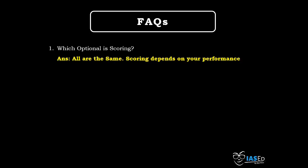There are frequently asked questions regarding the optional subject. The first question I get from new aspirants is: which optional is a scoring optional — which subject can fetch you more marks? My answer is that it is nothing like that. All subjects are the same. Your scoring depends on your command over the subject and your performance on the day of examination. The second question is: does UPSC prefer certain subjects over others, or give weightage to some and ignore others? The answer is a big no. There is never such kind of partiality in the process.